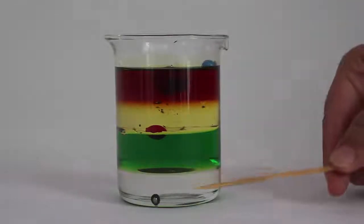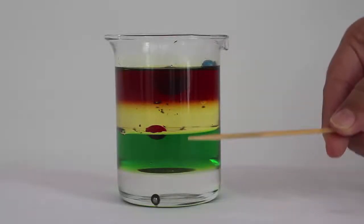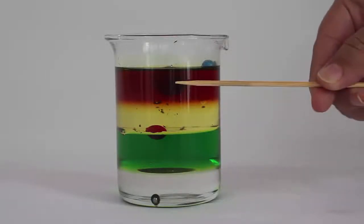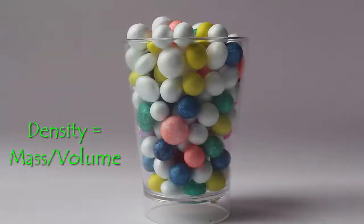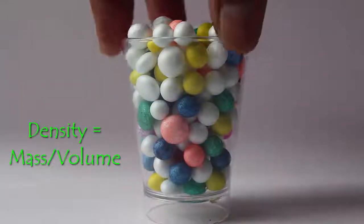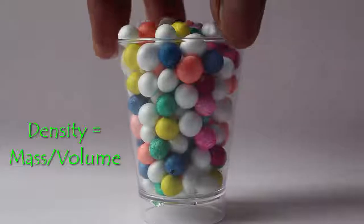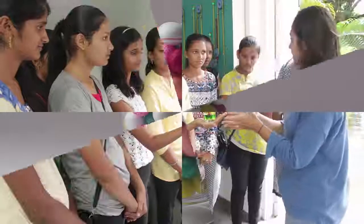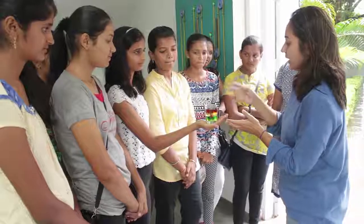Notice how liquids of different densities float above each other. At the bottom we have glycerine, then water, then vegetable oil, and castor oil. Density of a material simply depends on how many of its particles are packed inside a particular volume.